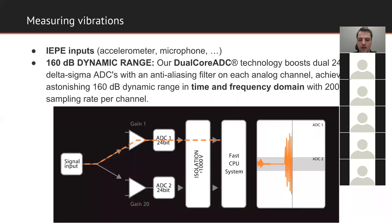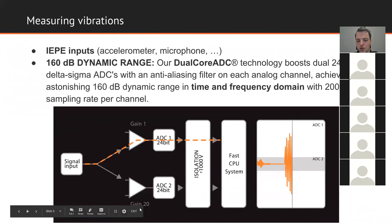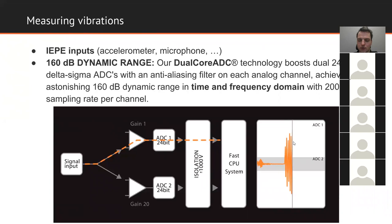The SIRIUS ACC amplifier has a dual core technology, which is a unique feature in Dewesoft. We have two 24-bit AD converters, each taking care of the signal with a different range. If we have a signal with a small range, one AD converter handles it — shown in gray in the picture — and if the signal has a high range, the other AD converter handles it. This is very useful for situations with sudden high-amplitude events, so we don't lose data. With this we can achieve a 160 dB dynamic range in the time and frequency domain.